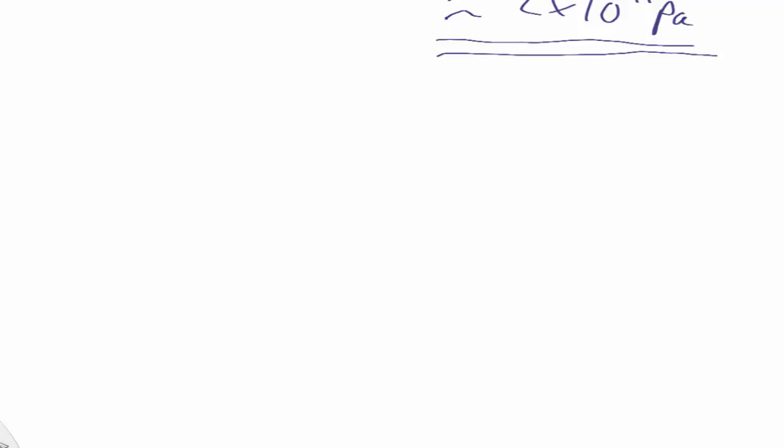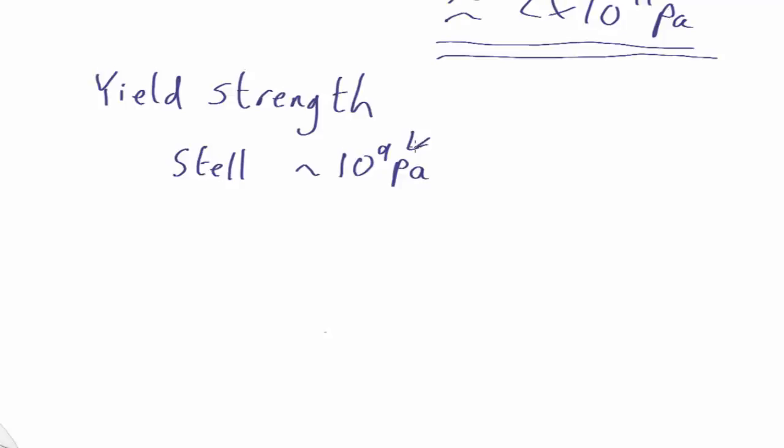How does that compare to actual materials? Well, you can measure what's called the yield strength of different materials, which is how much force per unit area they can take before they break. High quality steel, it's about 10 to the 9 Pascals.